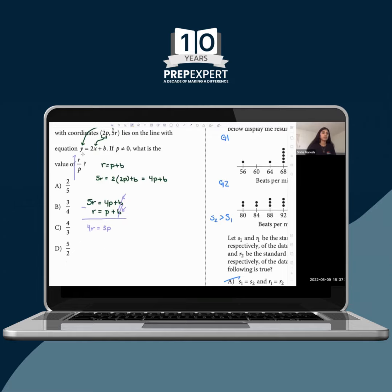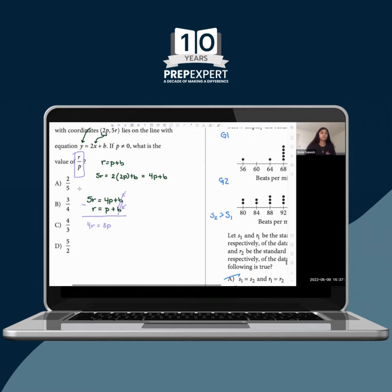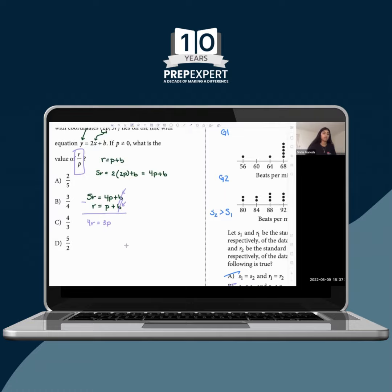Now, they're asking us for the value of r over p. So I'm going to try to put it into that form.